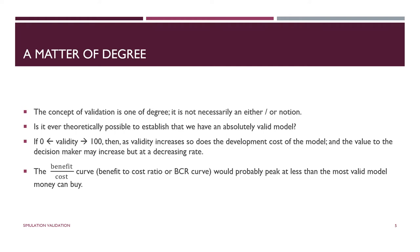If you think of validity as going from 0 to 100, as the validity of your model goes up, the development cost of the model goes up and your model becomes increasingly complex in order to mirror the real world. The value to the decision maker may increase slightly but at a decreasing rate — you reach the point of diminishing returns. The benefit-to-cost ratio curve would likely peak at something less than the most valid model money can buy. As in many areas of decision making, we're going to end up learning how to satisfice.